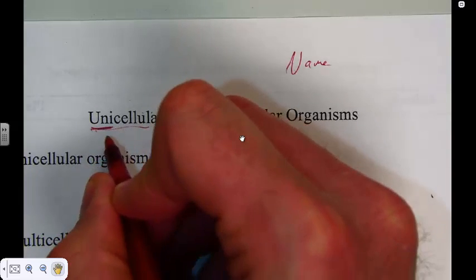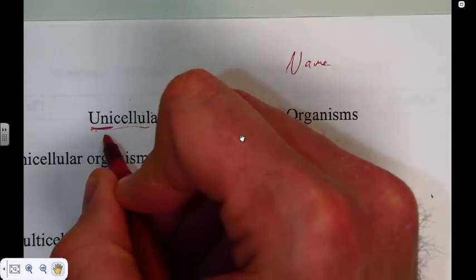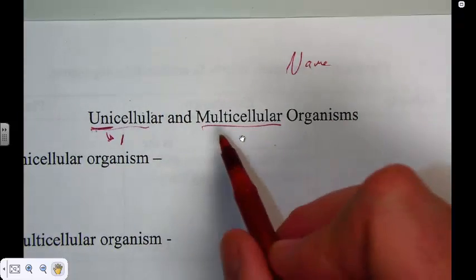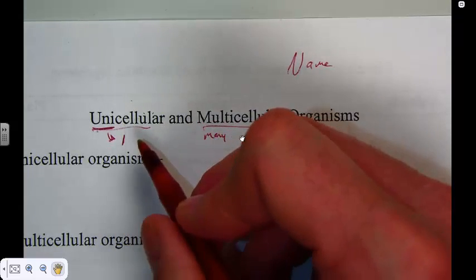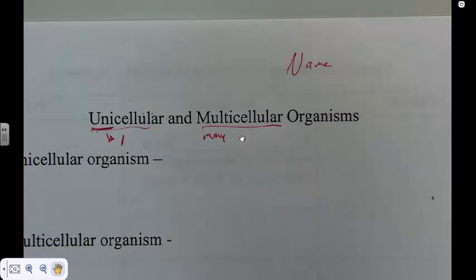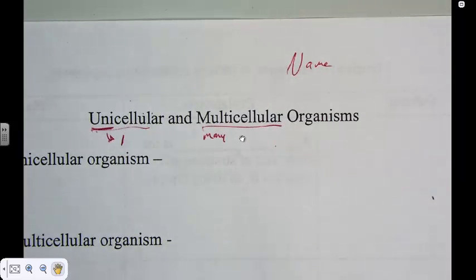The word uni, very much like the word unicycle, means one. What does unicellular and multicellular mean? Multi, of course, means many. So we have one cellular organism and many celled organisms.